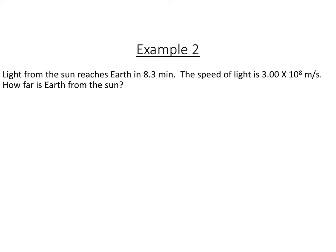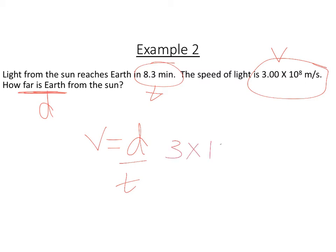All right, now the sun, light from the sun, reaches the earth in 8.3 minutes. So this is going to be a time. And then it tells us the speed of light. So that's going to be here. And then it wants to know how far from is the earth from the sun. So that's a distance. So we got velocity equals distance over time. So our velocity is 3 times 10 to the 8th meters per second. Distance is what we are looking for. So I'm just going to make it x. And then our time is 8.3 minutes.